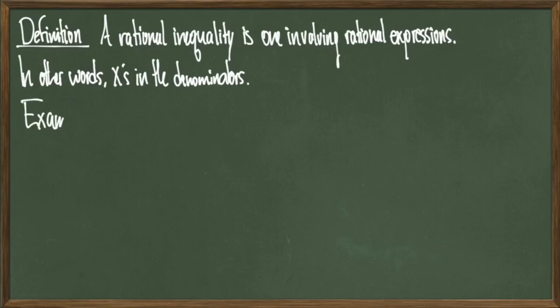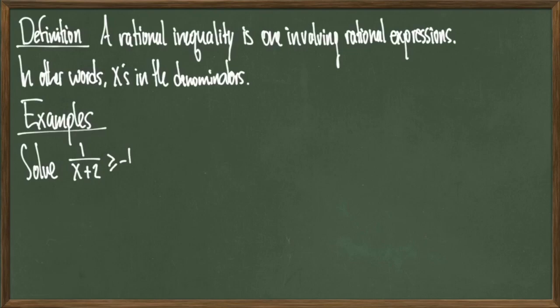Let's jump right into an example. Let's solve 1 over x plus 2 is greater than or equal to negative 1. If this were a rational equation, we'd be able to multiply both sides by x plus 2 and cancel out and do the math. But with inequalities, we can't do that. Multiplying by x plus 2 makes us lose a lot of information, so we have to be a little bit more crafty about how we handle this.